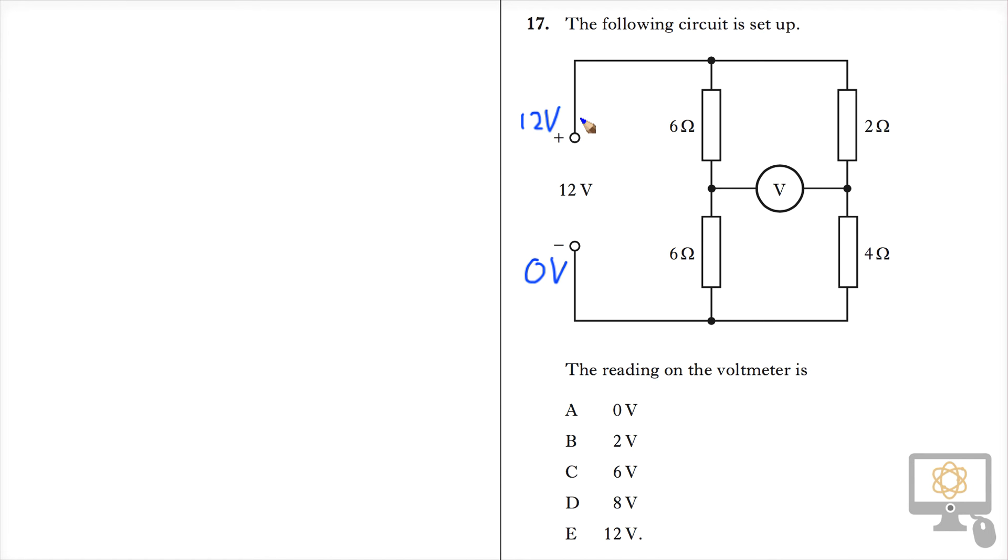So 12 volts means 12 joules per coulomb, which means if there was a coulomb of charge at this point it would have 12 joules of energy. And anywhere along here that one coulomb of charge is always going to have 12 joules of energy. If that coulomb of charge traveled down through these resistors it would give up some of its energy as heat in the resistors. By the time it got to the bottom of the circuit it would have 0 joules of energy left.